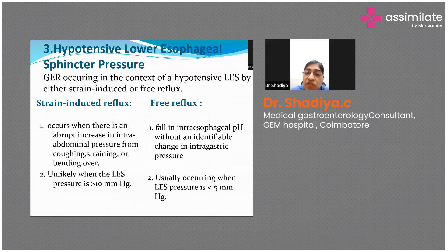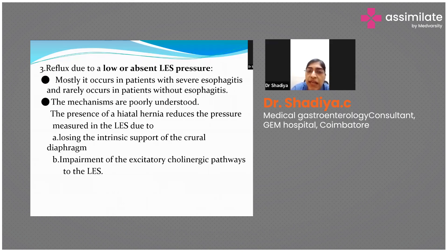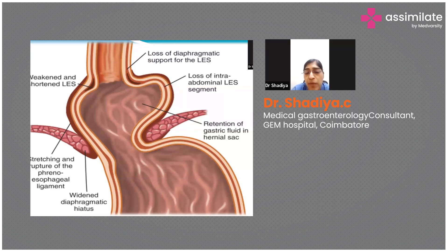Hypotensive lower esophageal sphincter is another reflux mechanism. This can be stress-induced reflux, where coughing, sneezing, or stooping raises intragastric pressure enough to cause reflux. There can also be free reflux where LES pressure is very low, allowing free flow of stomach content into the esophagus. In hiatus hernia, all components — LES pressure and crural diaphragmatic balance — are disrupted, making these patients prone to more reflux.